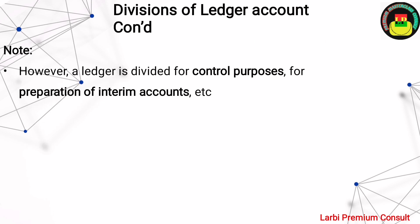The ledger is divided for two main reasons: for control purposes — helping us identify personal items and use control accounts as a cross-check — and for the preparation of interim accounts. These are the reasons why we divide ledgers into their various divisions.